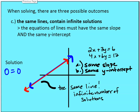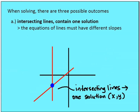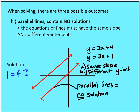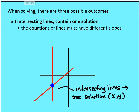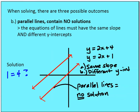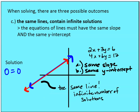So once again we have three outcomes for two lines in a plane: one point of intersection — lines that intersect, one solution; no points of intersection — parallel lines, same slope, different y-intercept, no solution; and two of the same lines — same slope and same y-intercept — where the solution is represented by something that is true all the time, meaning infinite solutions.